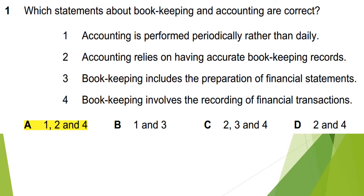Question number 1 asks: which statement about bookkeeping and accounting is correct? There are 4 options. Option 1 states accounting is performed periodically rather than daily — in accounting we make statements periodically, not daily. And bookkeeping is done daily.